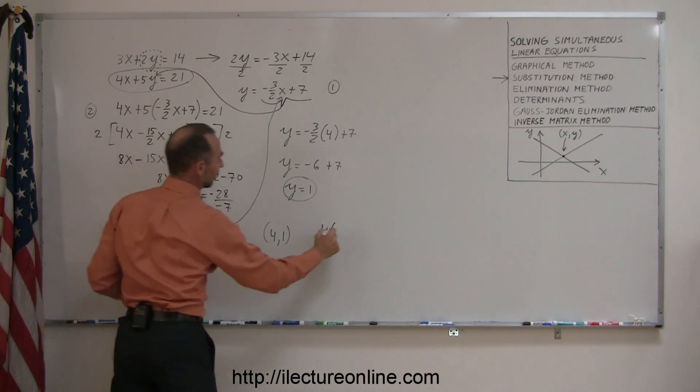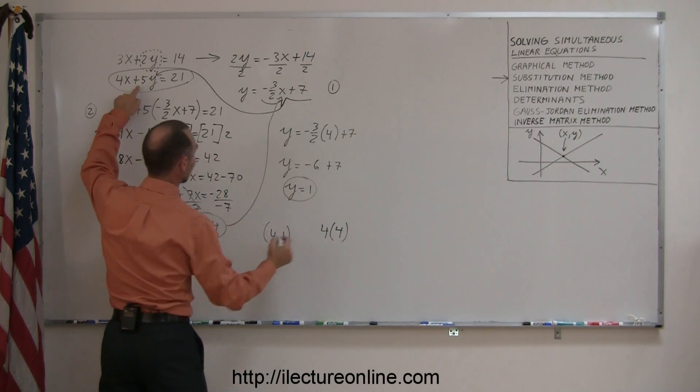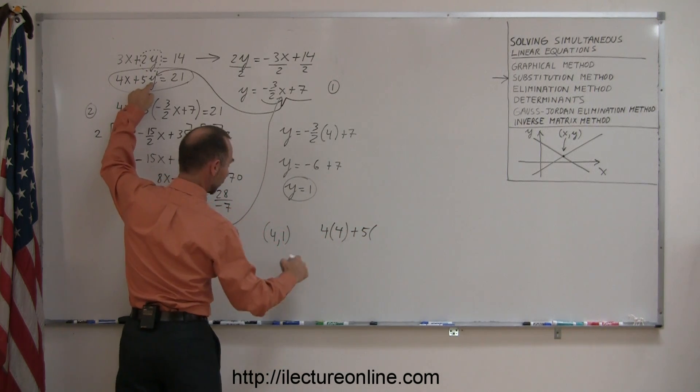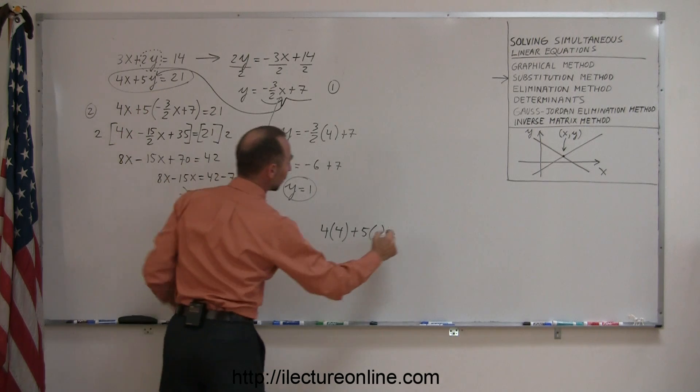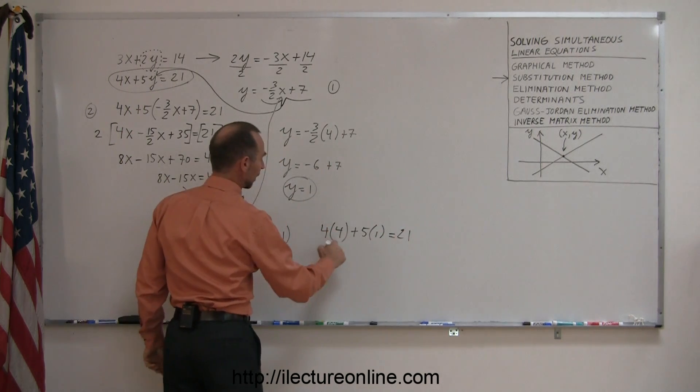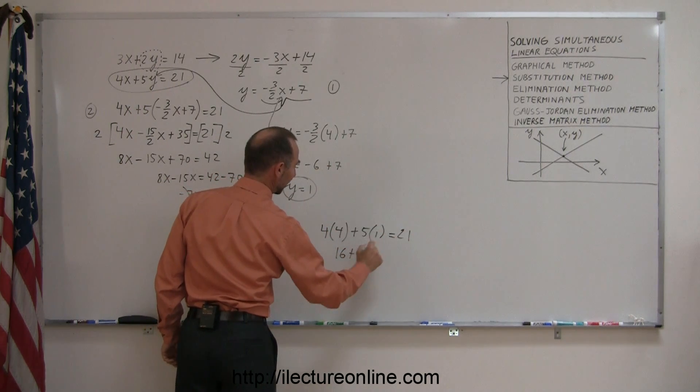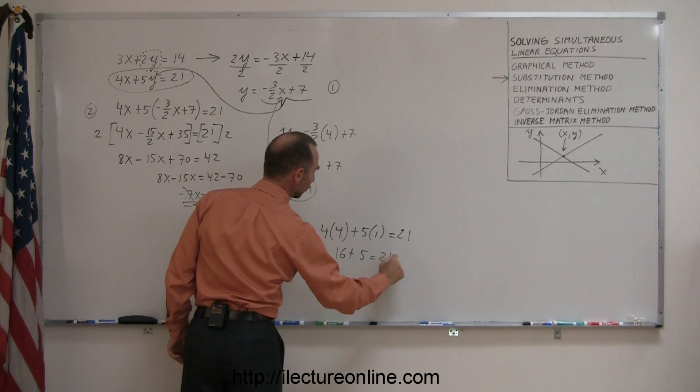Plus 5 times, instead of y, I'm going to write 1. And if I did everything correctly, that should equal 21. So 4 times 4, that's 16, plus 5 times 1 is 5. And sure enough, 16 plus 5 is 21, so that is the correct solution.